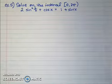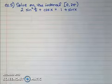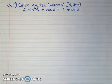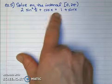It says to solve on the interval [0, 2π]: 2sin²(x/2) + cos x = 1 + sin x. We want to find values for x on that interval.